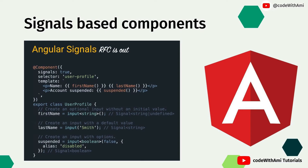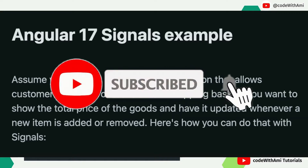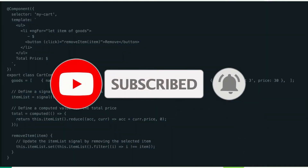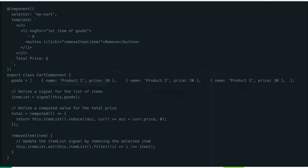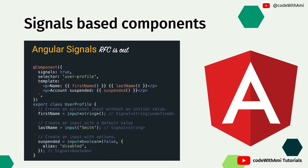The recommendation is to start using signals in performance-critical parts of your application. Signals are not going to replace the existing observable design pattern in Angular — they will be a new optional feature. Wherever you feel observables are taking too much time, you can replace that particular piece of code with signals. It is not possible to come up with an automatic migration to signals, and that's a big problem, which is why Angular signals will be an optional feature instead of just replacing the existing design pattern.